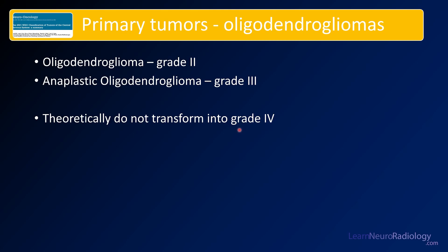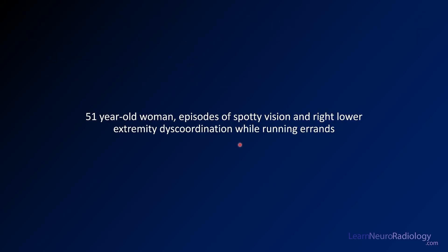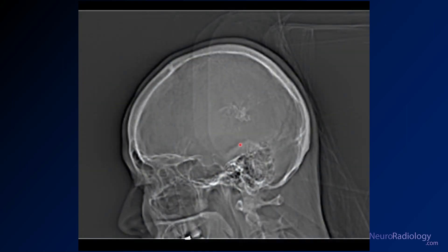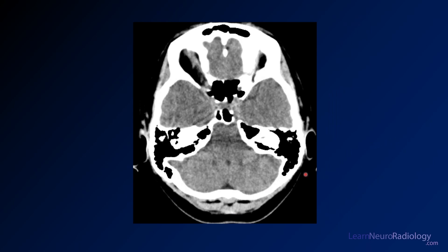Our case here is a 51-year-old woman with episodes of spotty vision, right lower extremity incoordination while running errands. Here we see a scout image from a CT. If you look in the middle of the image, there's something a little bit weird going on here, so just be attuned to that. But let's see some images from the actual CT.